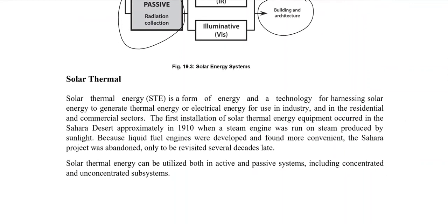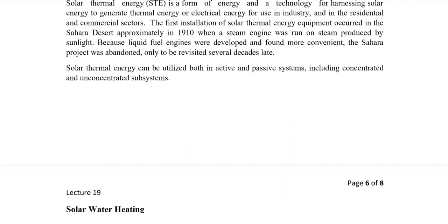Solar thermal energy is a form of energy and technology for harnessing solar energy to generate thermal or electric energy for use in industry, residential, or commercial sectors. The first installation of solar thermal energy was at a Sahara Desert site around 1910–1912, when a steam engine was run on steam produced by sunlight. Because fuel was cheap and coal was abundant at the time, it was not pursued further. It was revisited in the 1970s, when solar energy utilization became more viable.